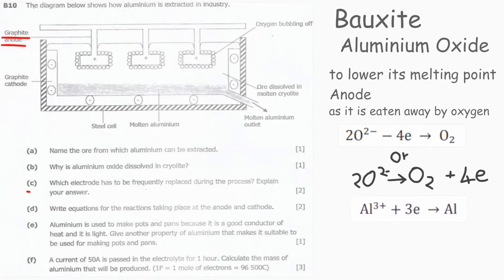Question E: Aluminum is used to make pots and pans because it is a good conductor of heat and it is light. Give another property of aluminum that makes it suitable to be used for making pots and pans. Aluminum is resistant to corrosion and heat. On top of that, it is non-toxic, so it is a suitable material to be used to make pots and pans.